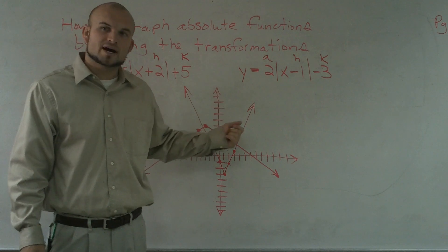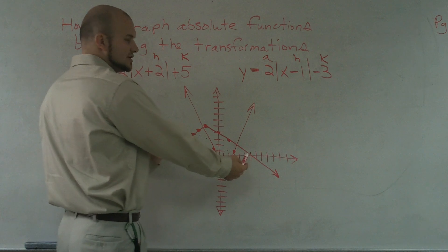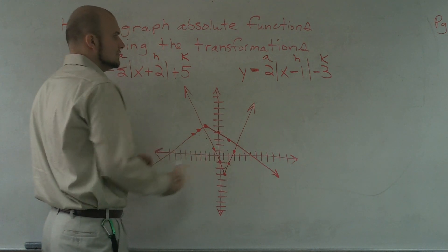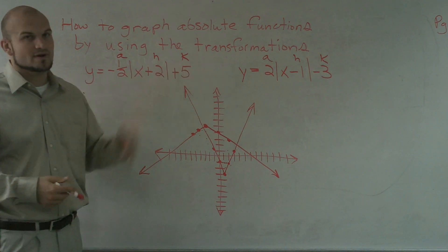You can also go ahead and use a table of values. The main important thing you use on your table of values is to make sure you use a broad enough range of values that you're going to get both sides of the vertex. So, that's how you graph absolute functions using the transformations right here.